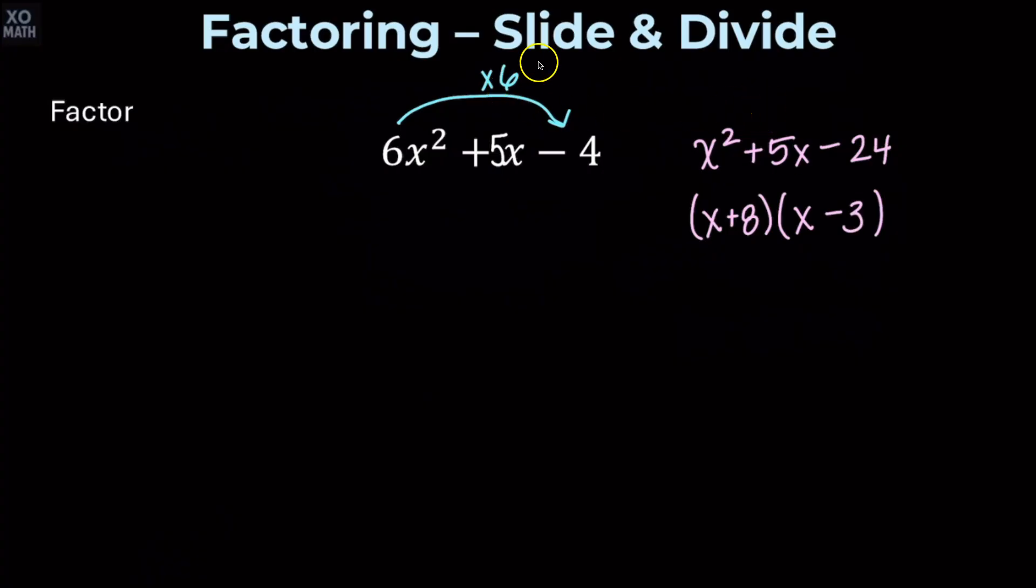Now, let's move on to the divide part. We're going to divide by 6 each of those numbers we just found. Both of them are going to reduce, but neither of them reduce to integers. So we're going to have x plus 4 thirds and x minus 1 half.